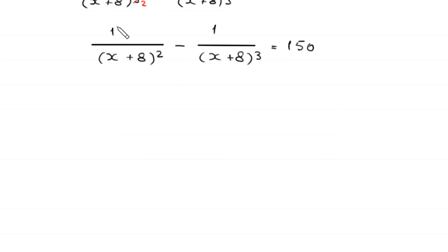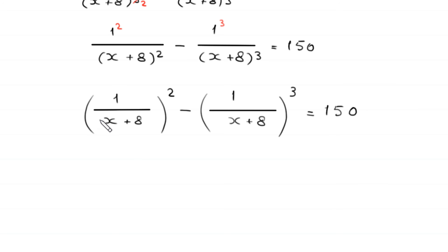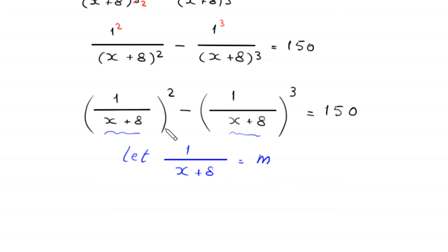Notice that 1/(x+8)² is the same as (1/(x+8))² and 1/(x+8)³ is the same as (1/(x+8))³. So we let m = 1/(x+8) and substitute, giving us m² − m³ = 150.